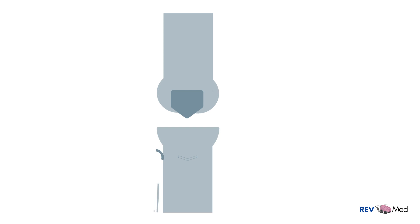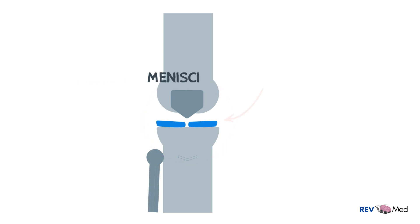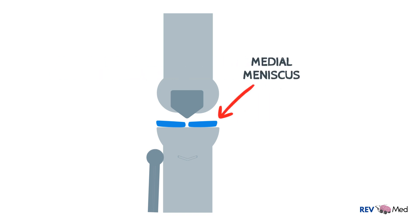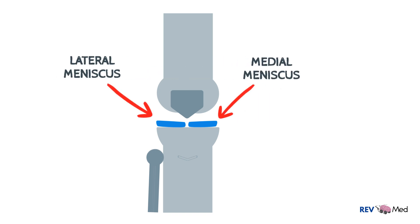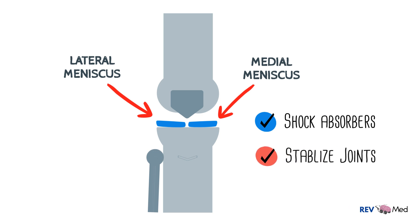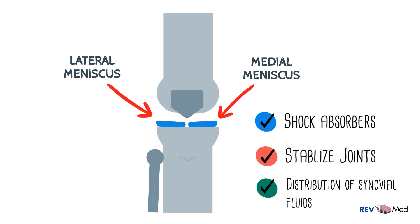In the right knee, between the joints are fibrocartilaginous structures called menisci. There's a medial meniscus and a lateral meniscus. They are shock absorbers and they help stabilize the joints. They also have a role in distribution of synovial fluid.